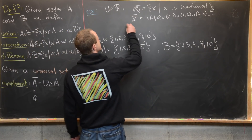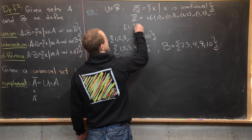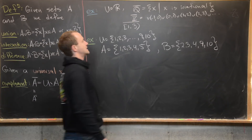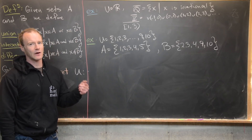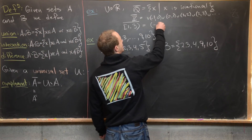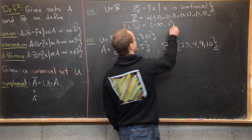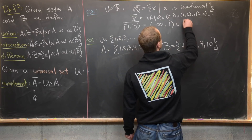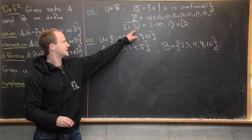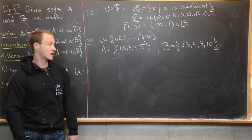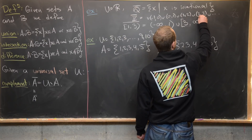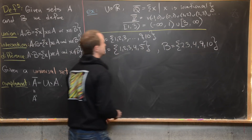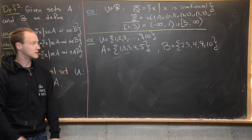Let's take the complement of the half-open interval [1, 3) with universal set ℝ. We want everything outside that interval: from negative infinity up to 1, not including 1, union (skipping everything between 1 and 3) from 3 to positive infinity, where we do include 3 since 3 is not in [1, 3). So the complement is (-∞, 1) ∪ [3, ∞).